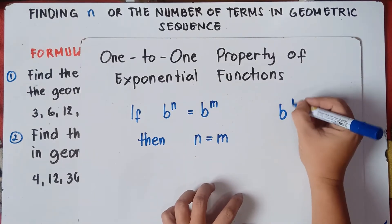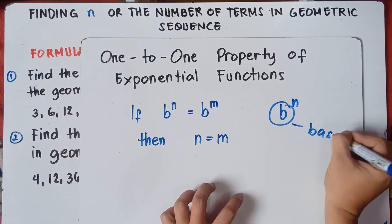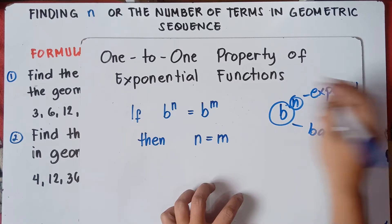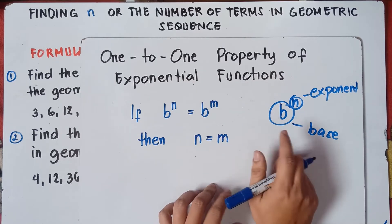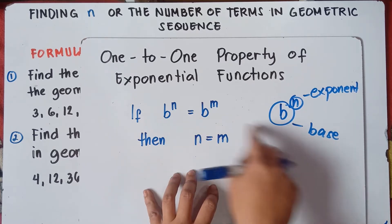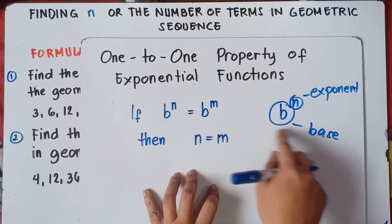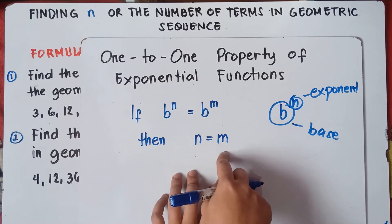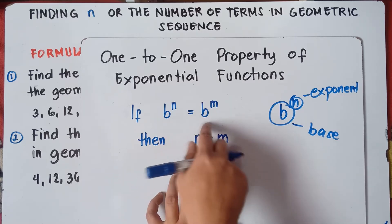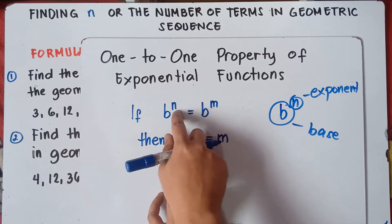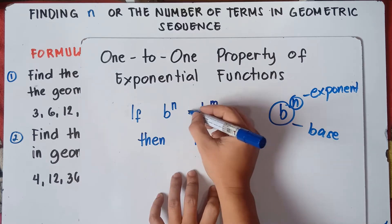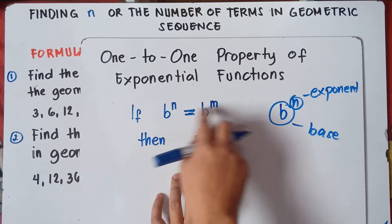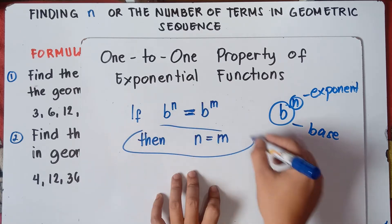So b here is the base and n is the exponent. According to the 1-to-1 property of exponential functions, if they have the same base, you can simply equate the exponents — you can say that n equals m.